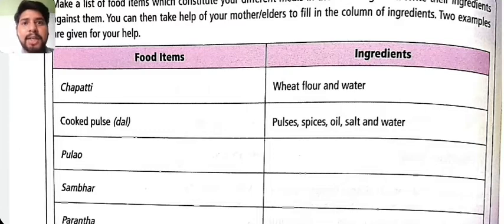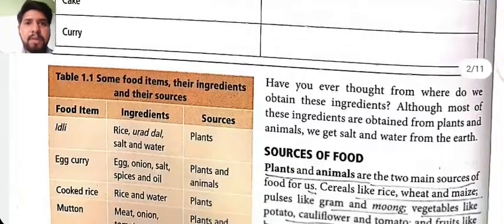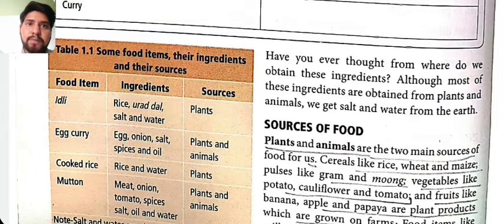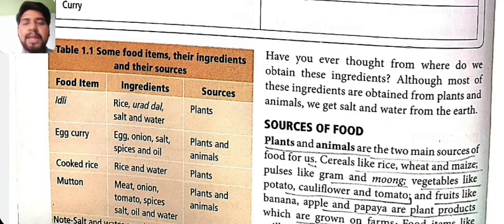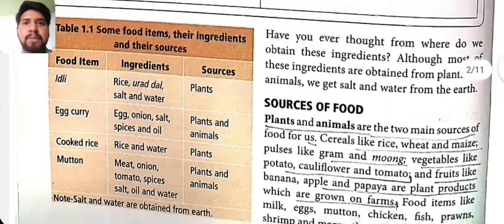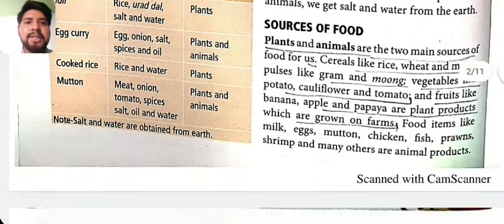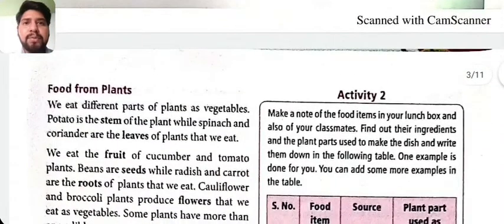For example, chapati has ingredients like wheat flour, pulses, spices, oil, salt, and water. Pulao is made up of rice — fill in the ingredients in your book. Now, plants and animals are the two main sources of food. From plants we get cereals like rice, wheat, maize; pulses like gram and moong; vegetables like potato, cauliflower, tomato; fruits like banana and apple. From animals we get milk, eggs, chicken, fish, and many other animal products.